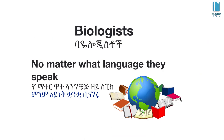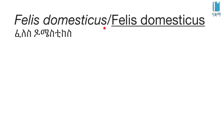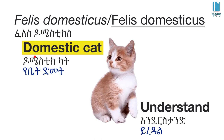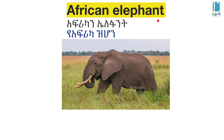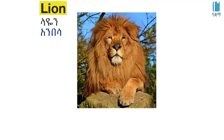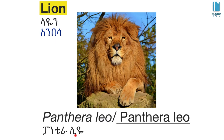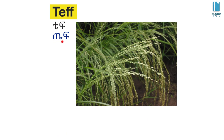For example, if you ask any biologist about a certain organism, they will know it by its scientific name. The domestic cat's scientific name is Felis domesticus, which avoids any regional naming confusion. The African elephant's scientific name is Loxodonta africana. The lion's scientific name is Panthera leo. The tef wheat's scientific name is Eragrostis tef.